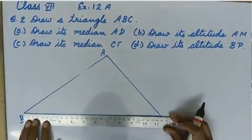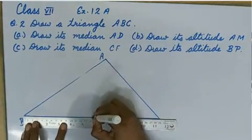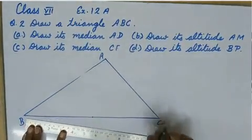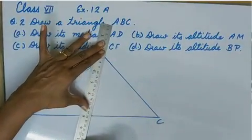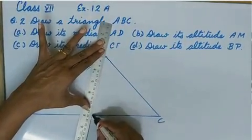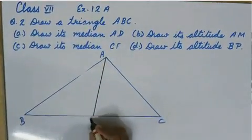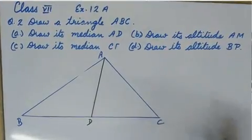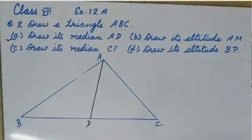So, with the help of ruler, we will mark the midpoint of BC and then join A and this point. Mark it D so AD is the median.